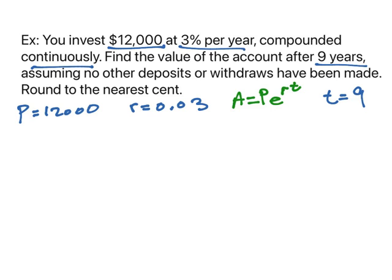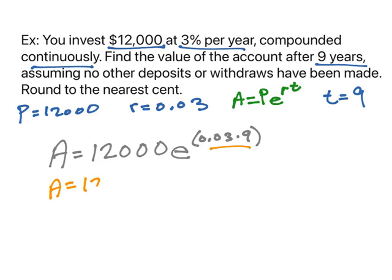Okay, let's plug in what we know. A equals 12,000 times E with exponent 0.03 times 9. Now, order of operations says let's do the exponents first. So, A equals 12,000 times E raised to the 0.27 power.